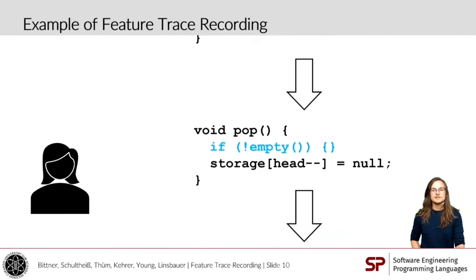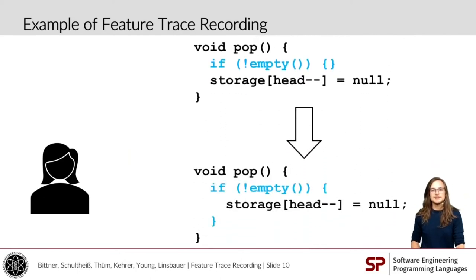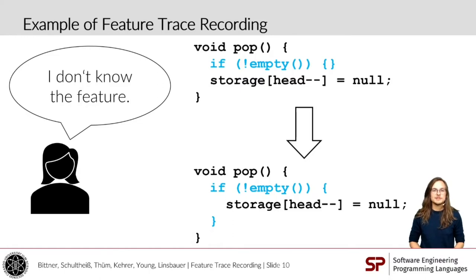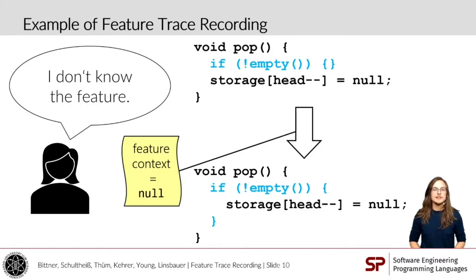To finalize the bug fix, Alice has to move the existing line of source code into the condition, but this time she doesn't know the feature of the moved line, and as indicated by the black color, there's also no information on Feature Traces yet, as previous developers also did not specify it. For this reason, Alice can also leave the Feature Context empty, which we denote with null. So she's not forced to set it, and can proceed anyway.